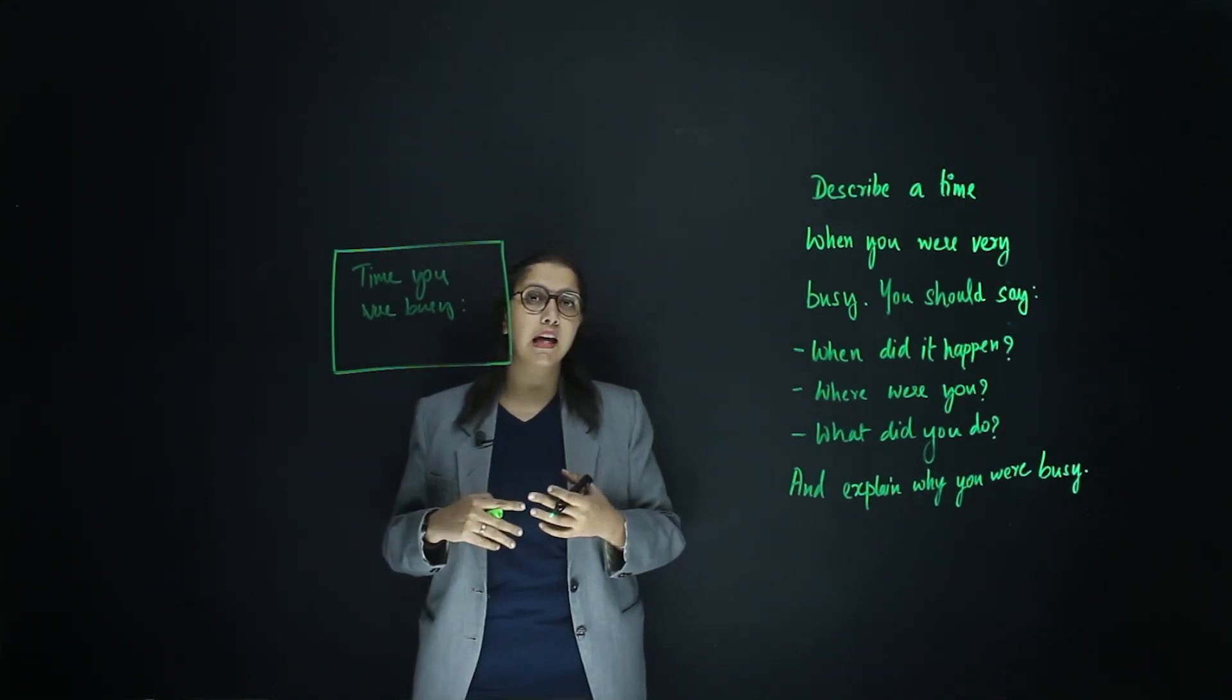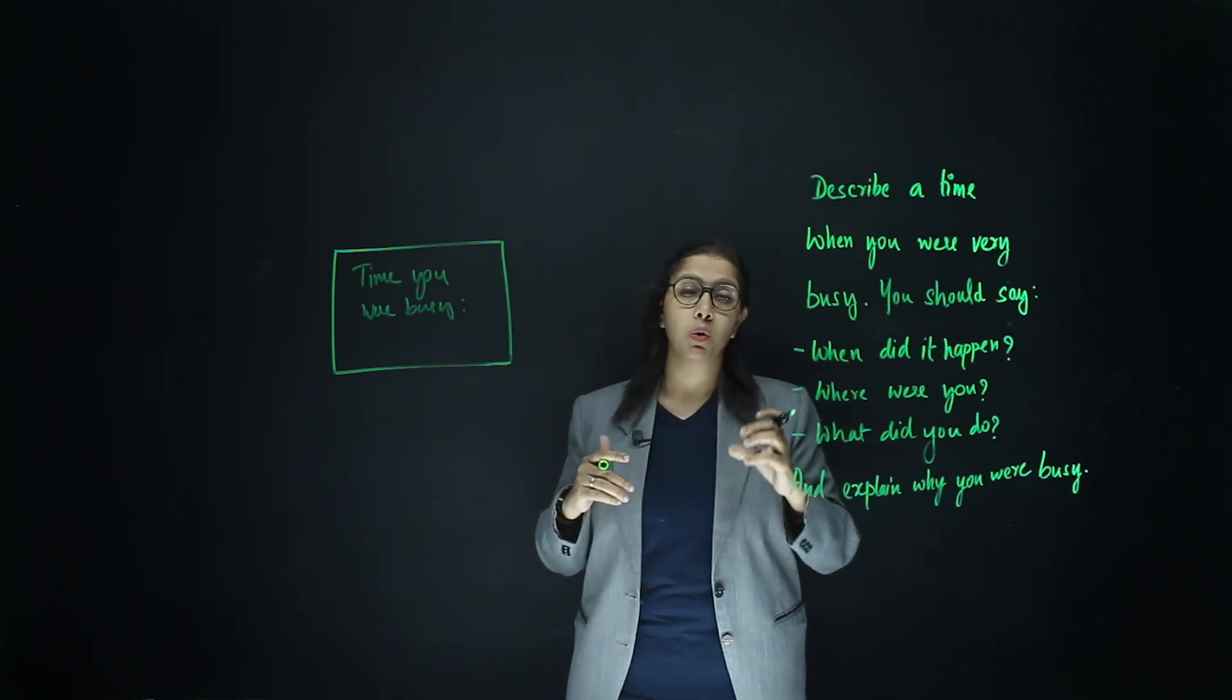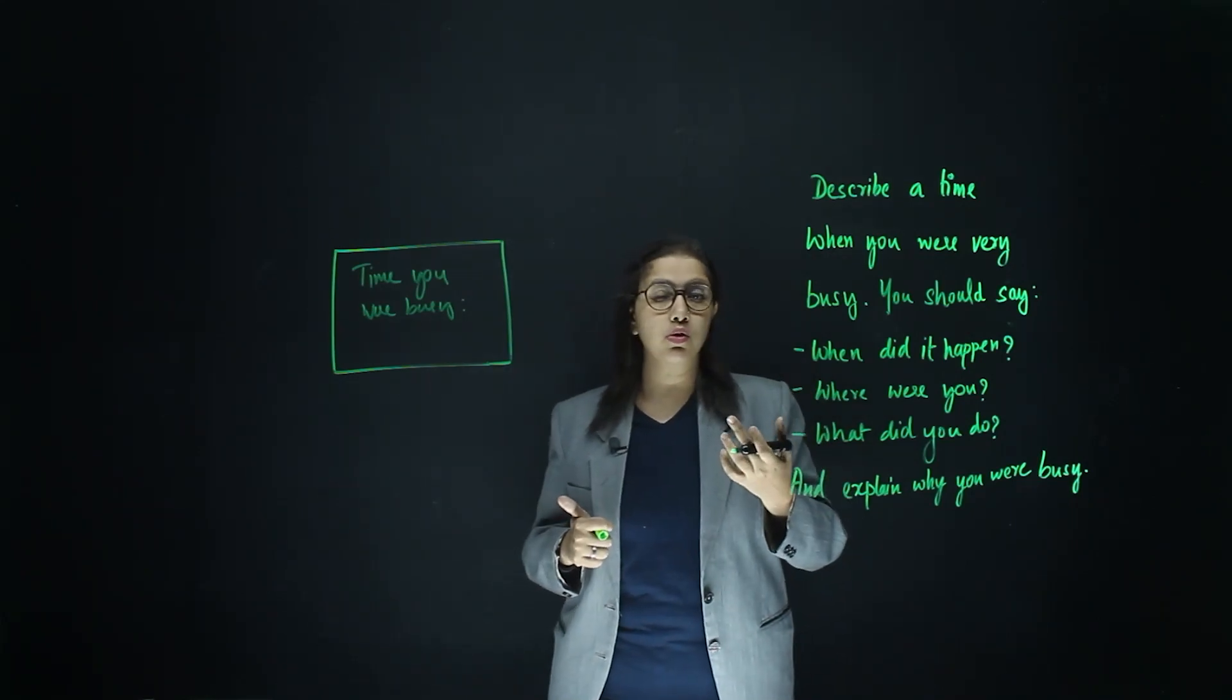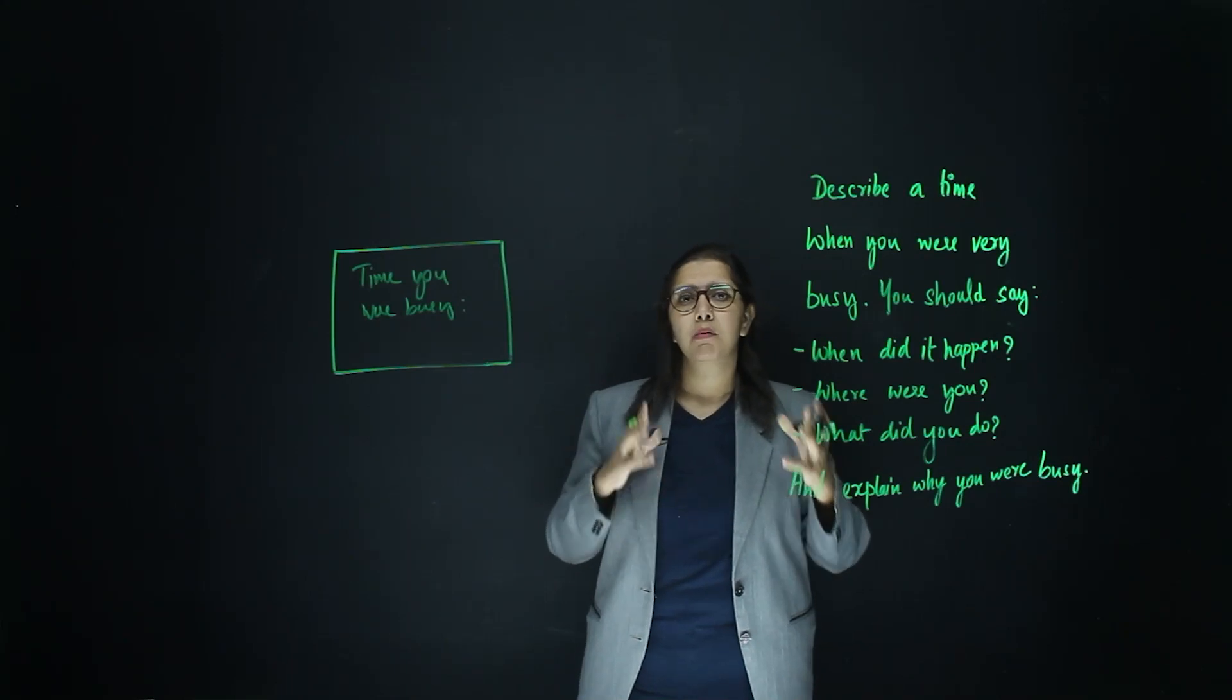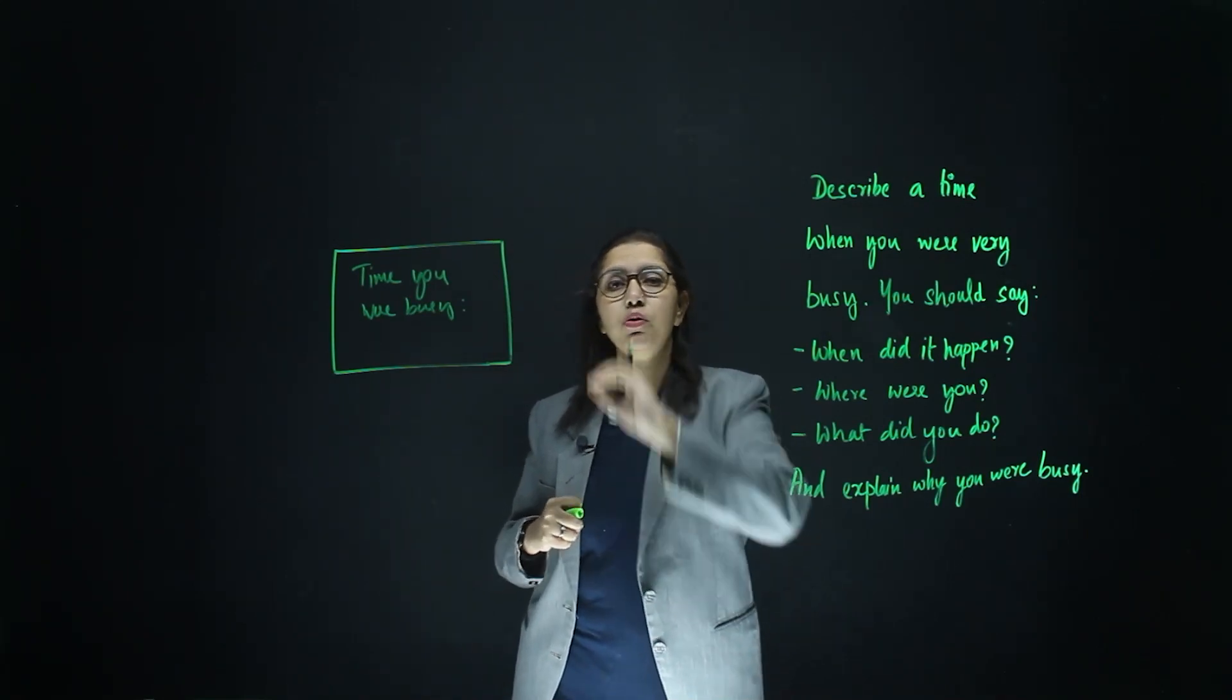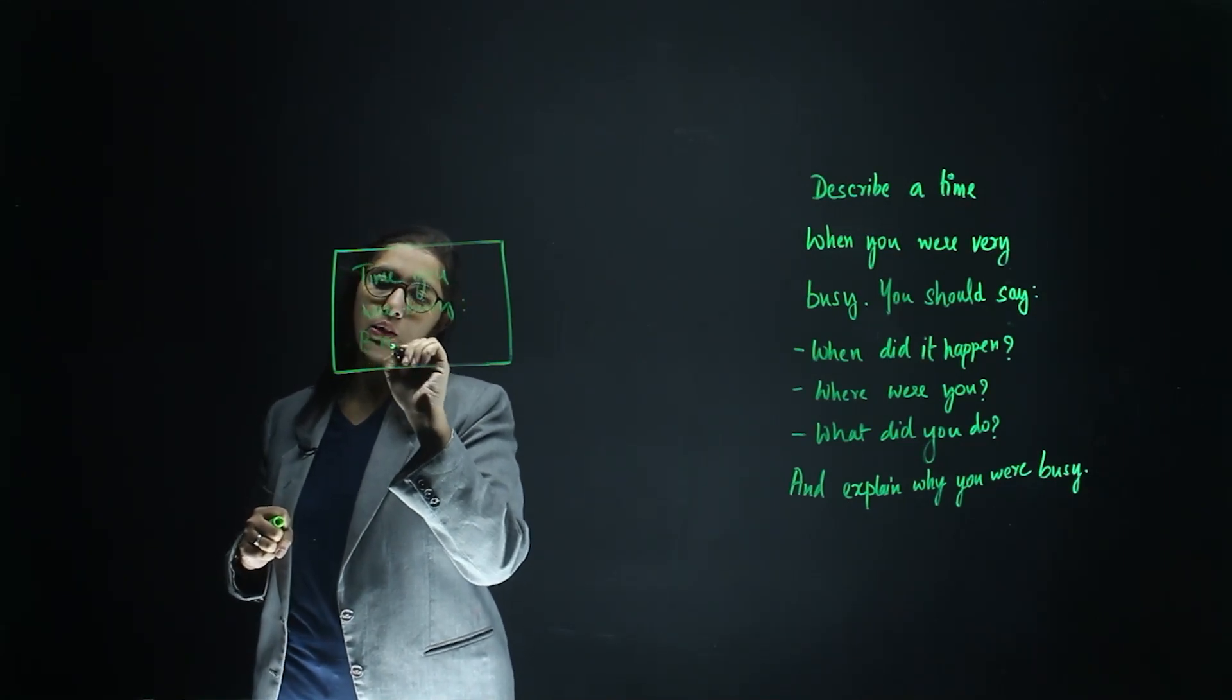An example could be, I was busy at my wedding or at my brother's wedding. Because usually, occasions are a time when you are too busy to keep up with everything. Another thing that you can do is, you can talk about work. A time when you were busy at work. Because this is also one area where people generally tend to spend a lot of time. And you will also get a lot of points to build upon your thoughts. So, I am going to go with brother's wedding.